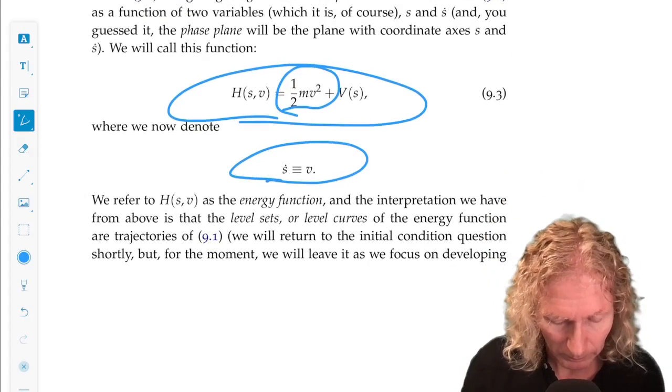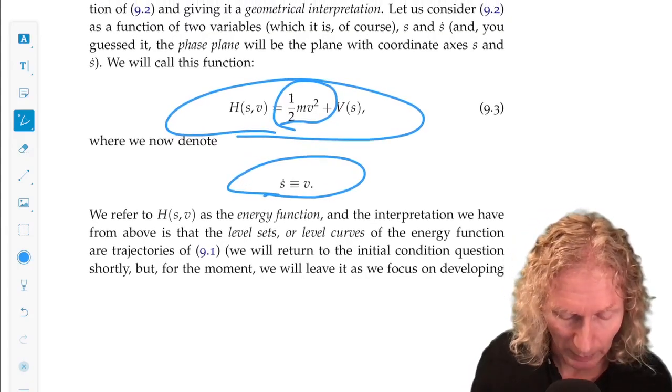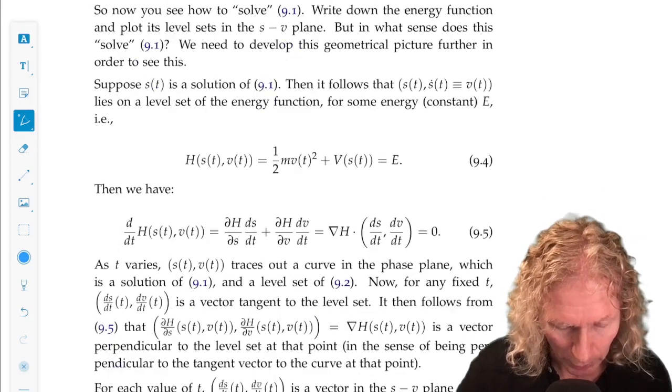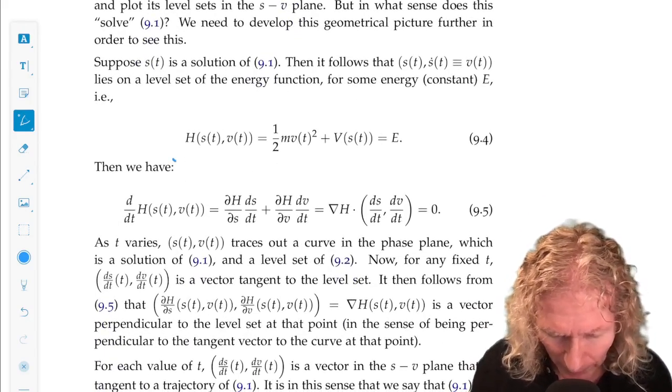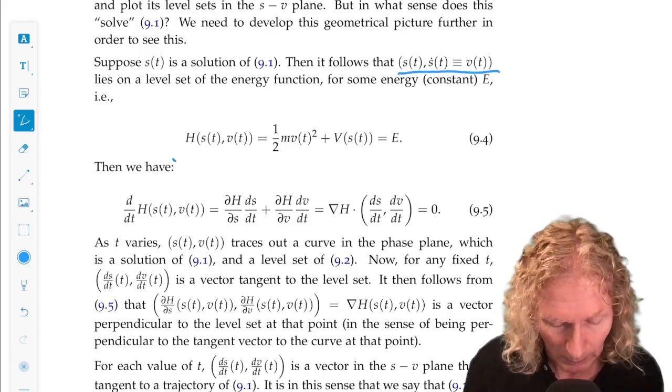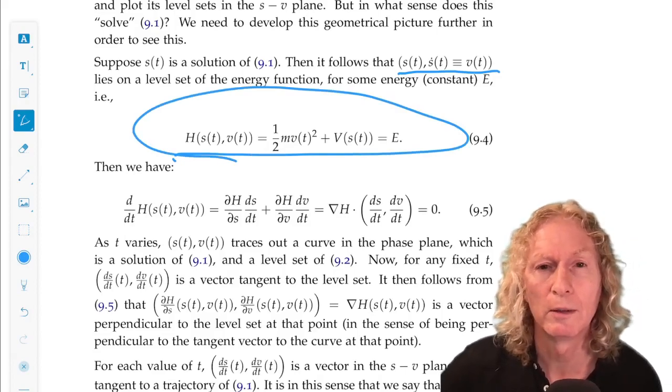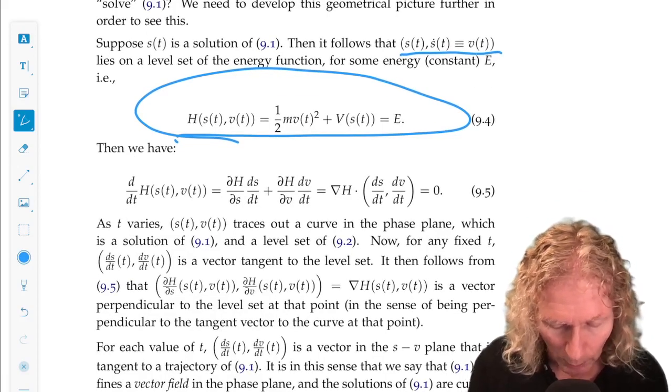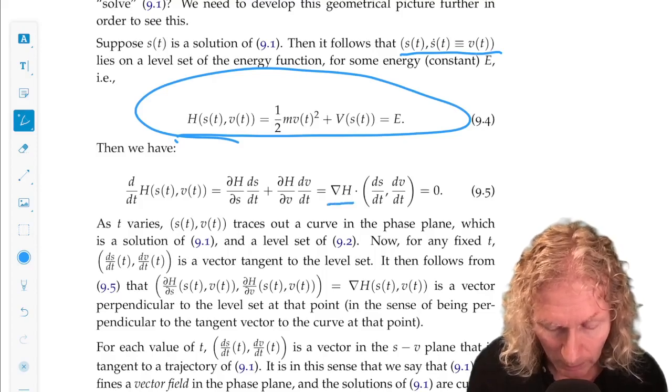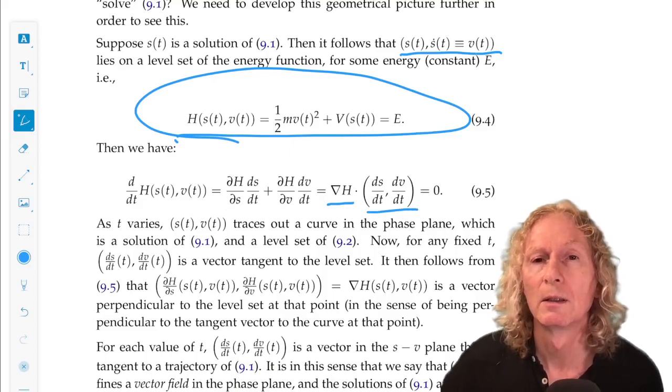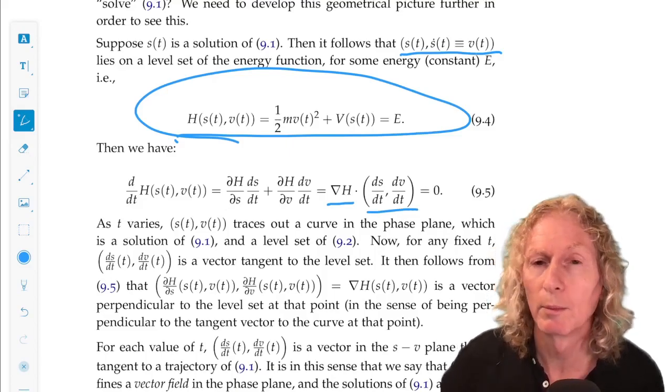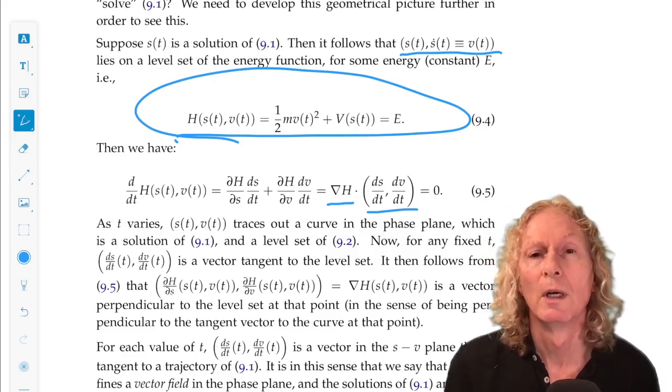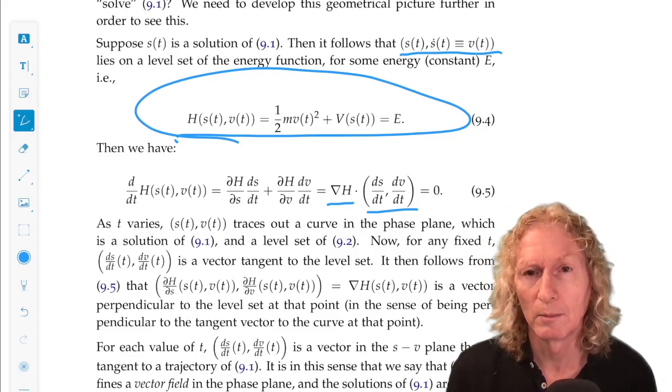So we're interested in the level sets or level curves of h. We want to develop a more geometrical picture for this. If we have a solution s of t, v of t, we know that it is constant on this function. So if we differentiate it with respect to time, use the chain rule, we see that that's equal to the gradient of h dotted with ds dt, dv dt equals zero. So the gradient of h is perpendicular to ds dt, dv dt, the tangent vector to a solution s of t, v of t in the phase plane.